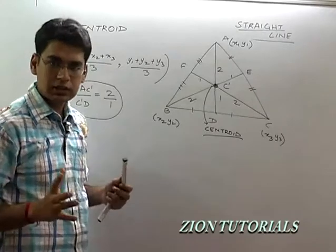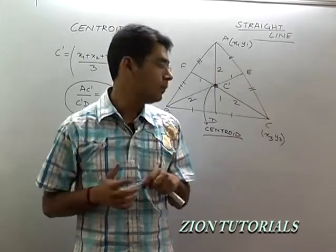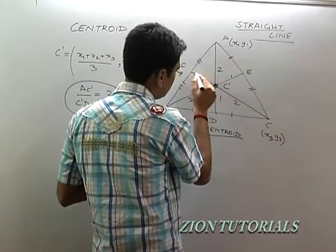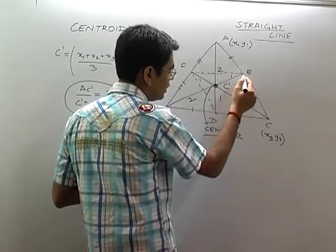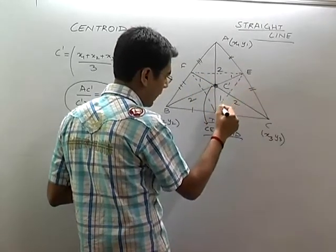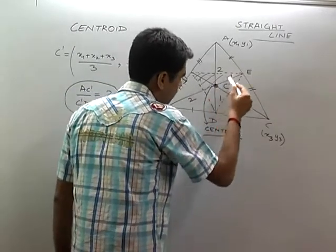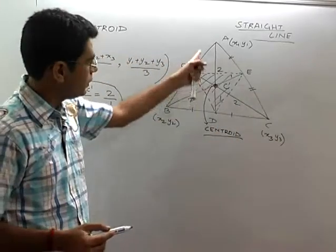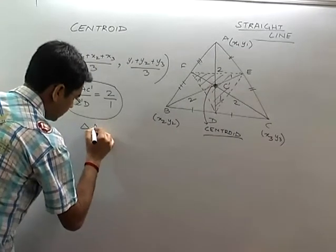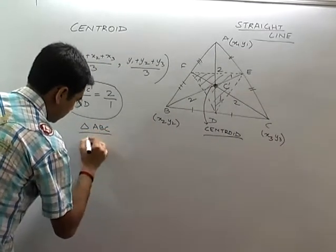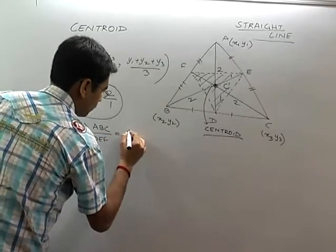There is another property you can remember, because it will come very handy in exams like AIEEE. If you form a triangle using the middle points D, E, F, then the area of triangle DEF is one-fourth of the area of triangle ABC. So delta(ABC) upon delta(DEF) equals 4:1.